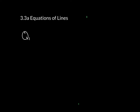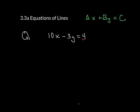Standard form of an equation of a line looks like ax plus by is equal to c. So for question one, something similar to 10x minus 3y is equal to 4. This is in standard form, which means that the x and the y are on the same side and all the coefficients are integers.